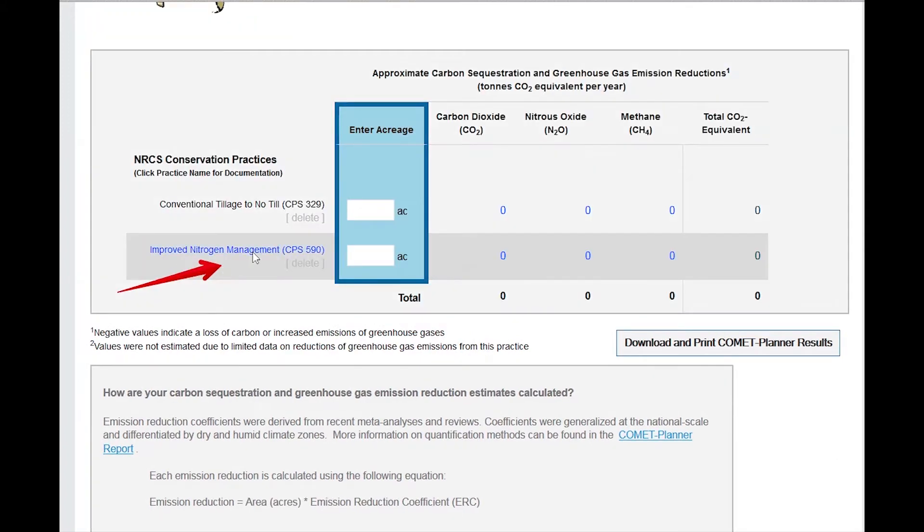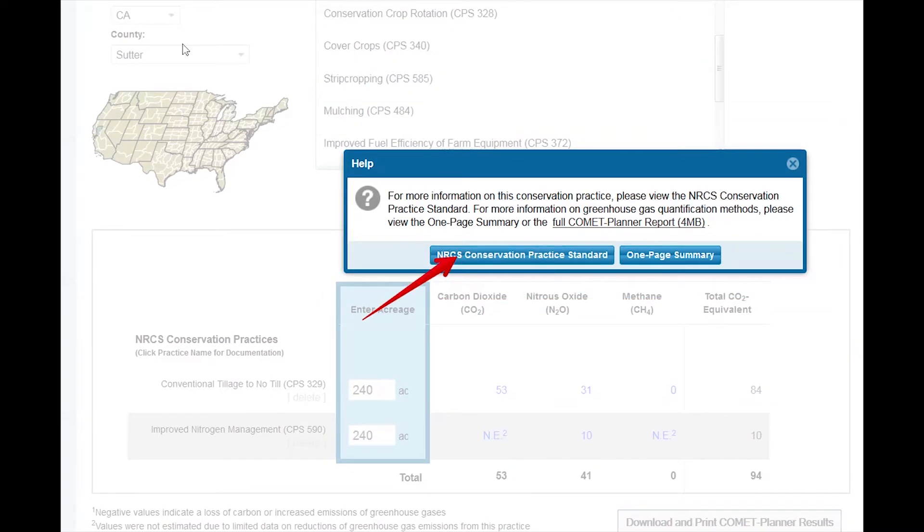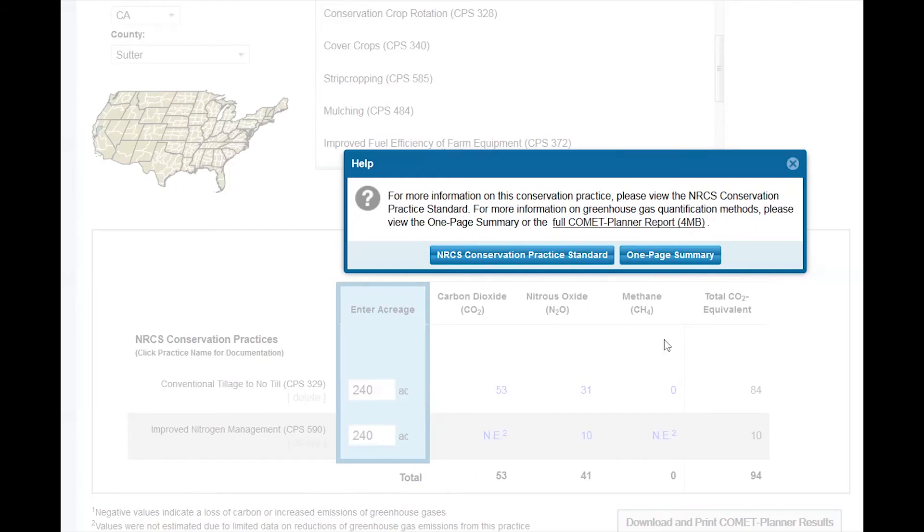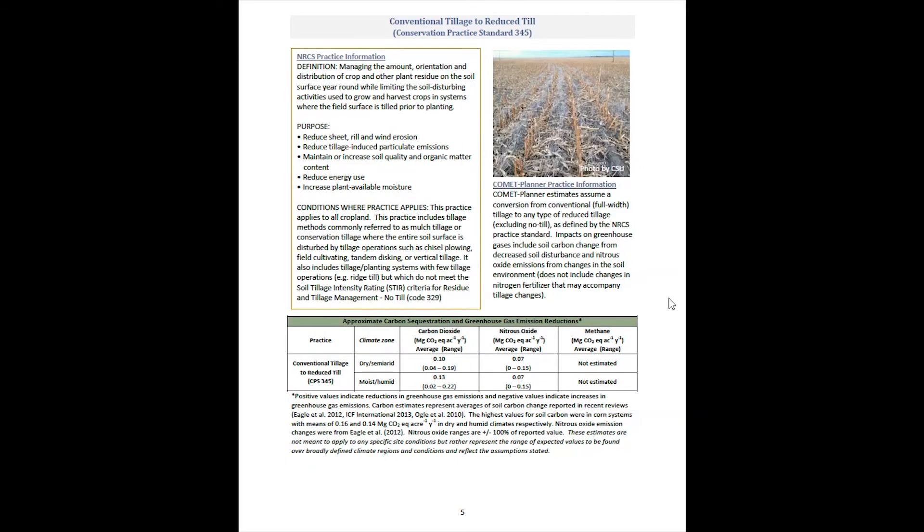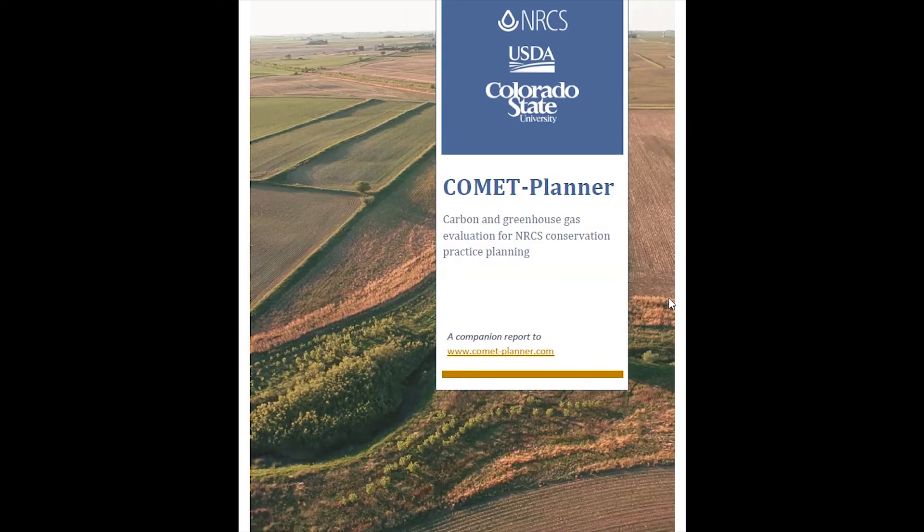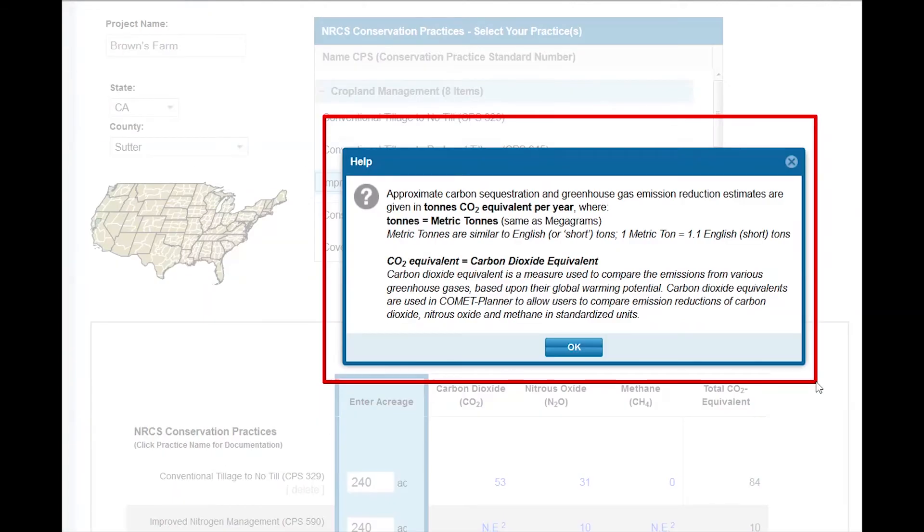Clicking on a conservation practice standard will generate a help window that allows users to gain more information on the conservation practice standard and its implementation in Comet Planner. The help box provides three options. Detailed information on the conservation practice is generated by clicking on any one of the three options provided within the help window. The full Comet Planner report can be downloaded here. A similar help window defines tons of carbon dioxide equivalent per year as it is applied in Comet Planner.